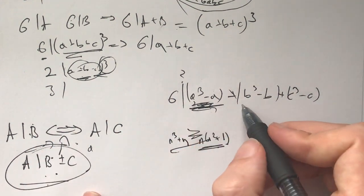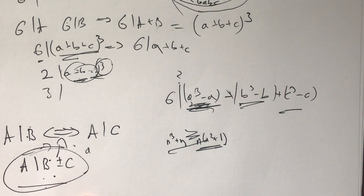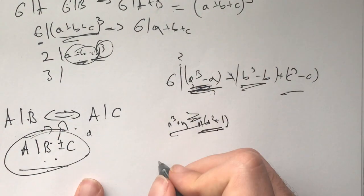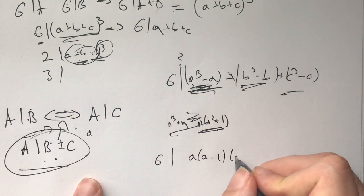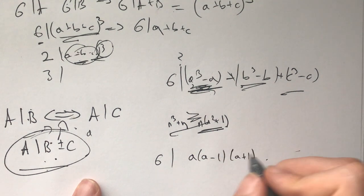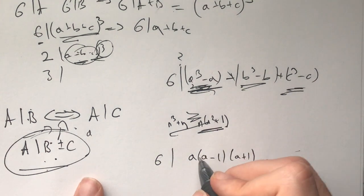But anyways, this thing right here, we actually can prove. And how are we going to prove this? Well, this is true if and only if 6 divides a times a minus 1 times a plus 1, b times b minus 1 times b plus 1, c times c minus 1 times c plus 1.